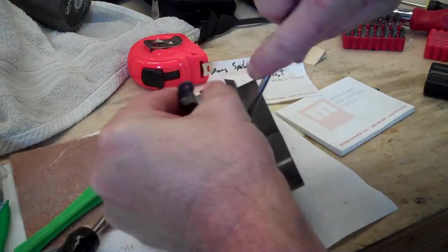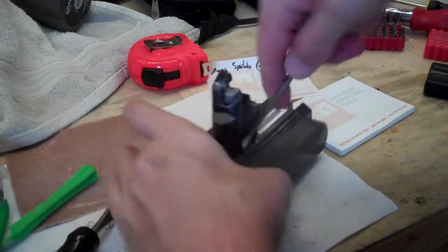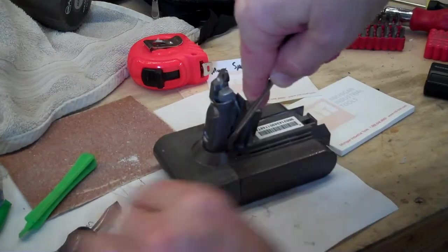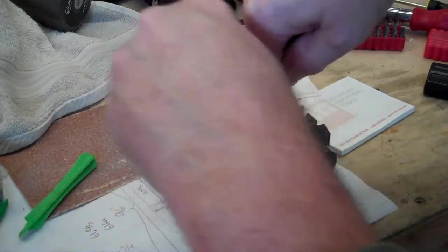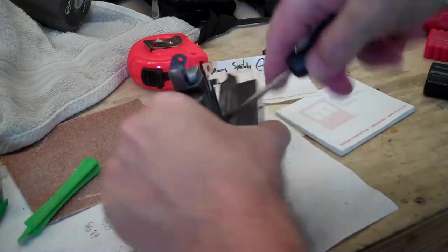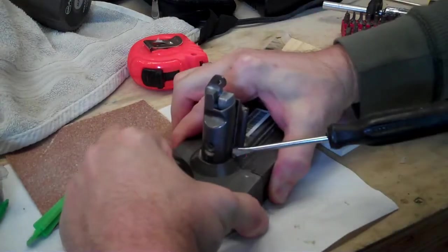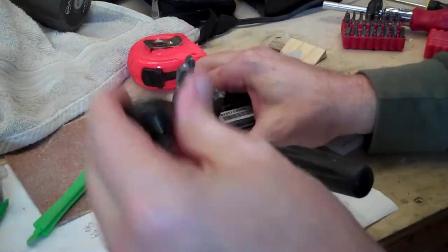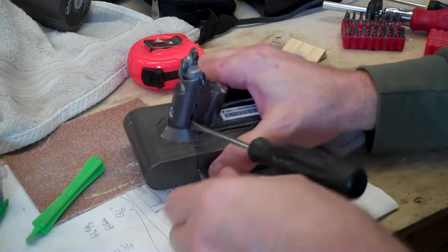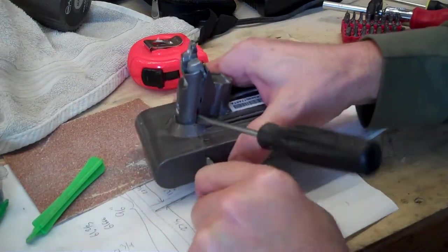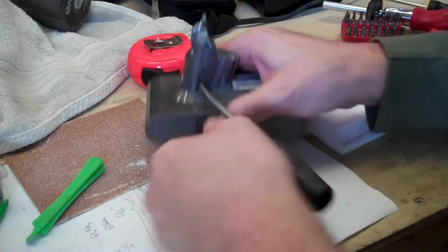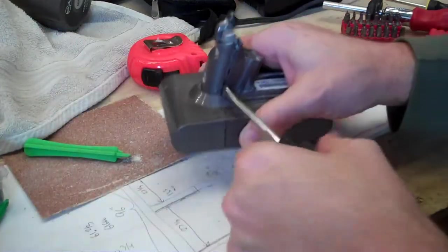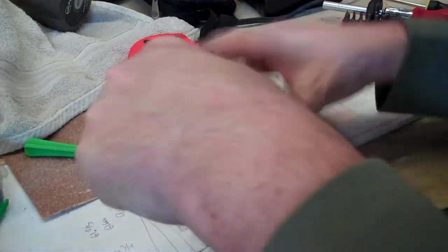So you can see here this bit is popping out and we're definitely going to be making a mess of the case doing this and there might be some special tools that would let you do this without marring the case but I tried my plastic spongers and they started snapping so we're going to the metal screwdrivers at this point.